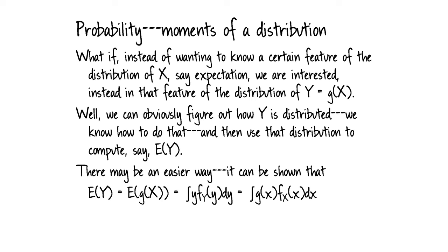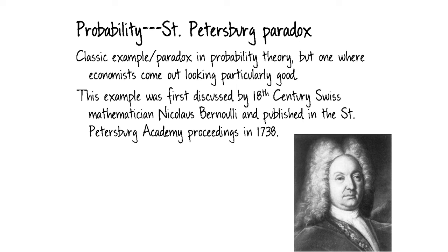Now let me do an example using that exact calculation. It's called the St. Petersburg Paradox — a classic example in probability theory, taught to students for centuries. It was first discussed by 18th century Swiss mathematician Nicholas Bernoulli and published in the St. Petersburg Academy proceedings in 1738. That's where it got its name.